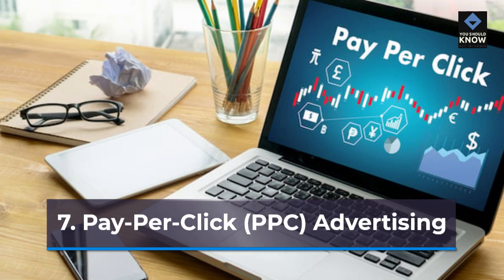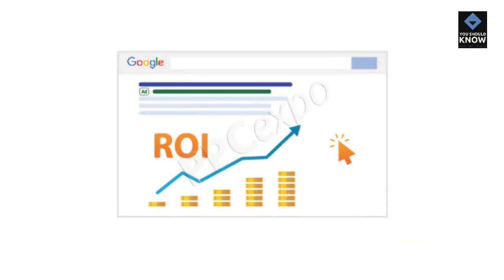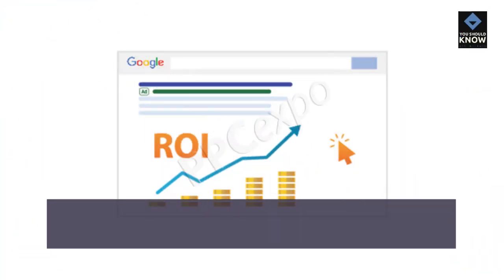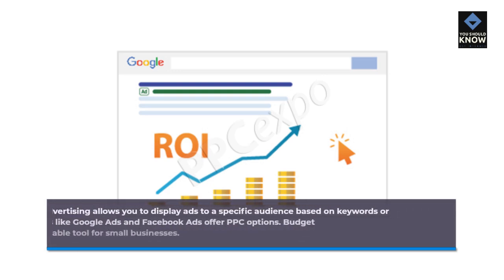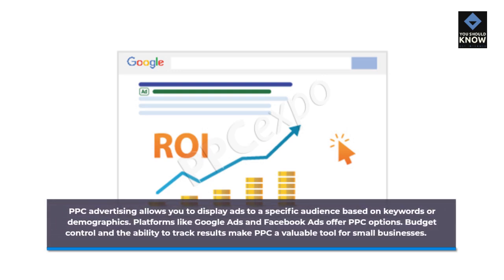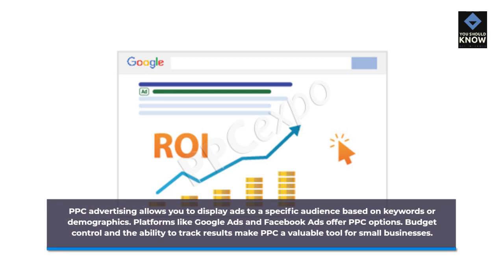Pay Per Click Advertising. PPC advertising allows you to display ads to a specific audience based on keywords or demographics. Platforms like Google Ads and Facebook Ads offer PPC options. Budget control and the ability to track results make PPC a valuable tool for small businesses.